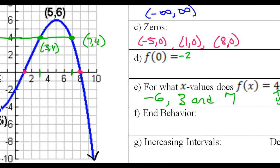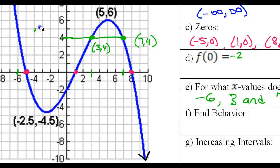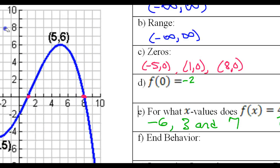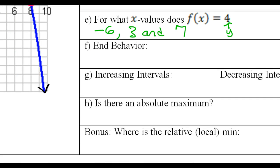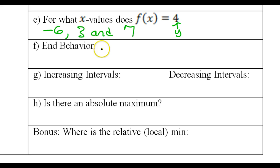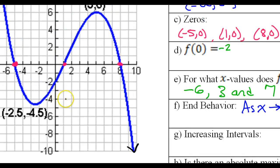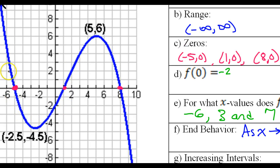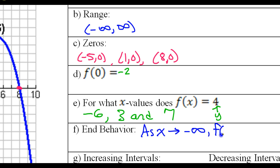End behavior is what happens at the ends of the graph — what happens on the left and what happens on the right. For the left, we say: as x approaches negative infinity. As I slide to the left, the graph goes up forever. So as x approaches negative infinity, the y values approach positive infinity.